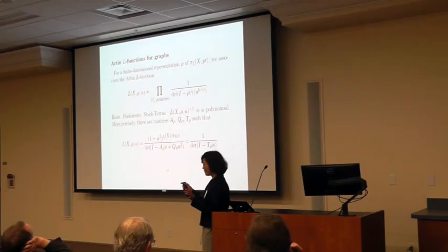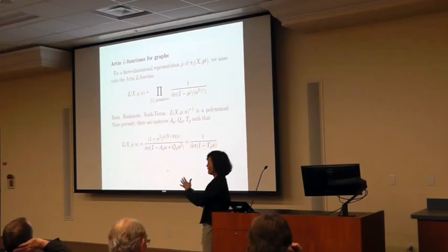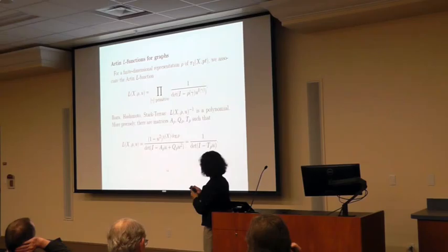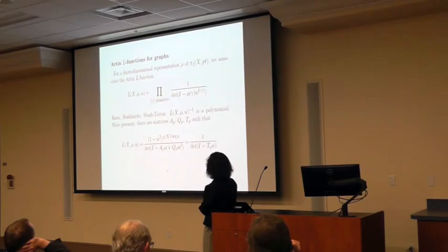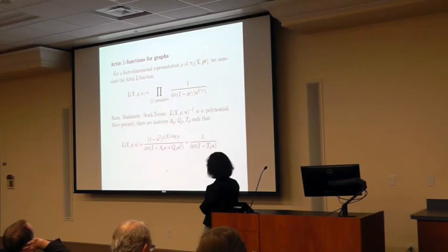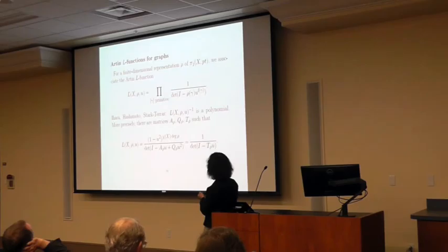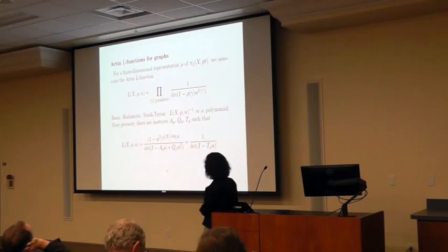If we think of a finite graph playing the role of a number field, then for a number field we have the absolute Galois group, and the corresponding role on the graph is played by the fundamental group. For each finite-dimensional representation of the fundamental group, we can define the Artin L-function. It is a product over conjugacy classes of primitive elements, over 1 over the determinant of (I minus ρ(γ)·u to the length of γ). When the representation is trivial, we recover the zeta function; otherwise we have the Artin L-function. It is a result of Ihara, Hashimoto, and Stark–Terras that the analogous relations seen for the zeta function also hold for the Artin L-function, with each matrix scaled by the dimension of the representation.